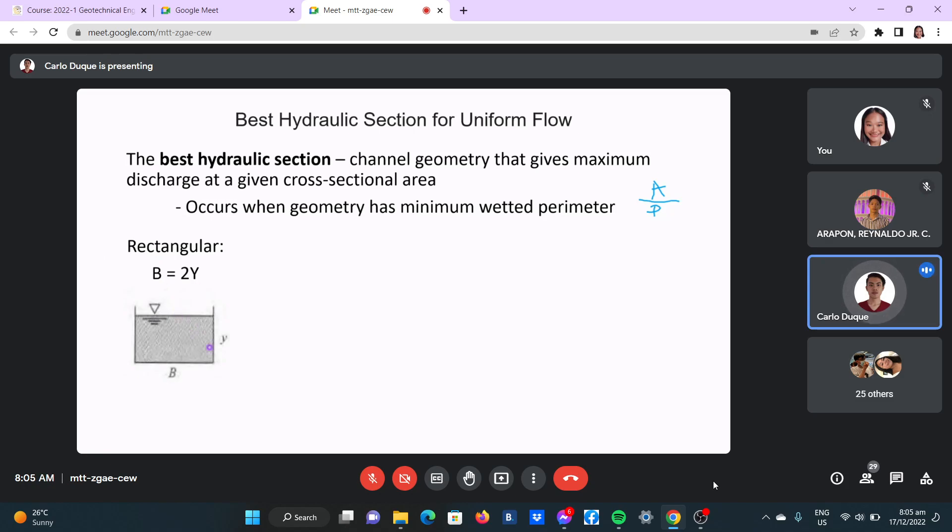Therefore, two times Y is just equal to base. If half of a square, the base and the sides are equal. So if you cut this in half, therefore the Y is just equal to half of the B. So B is equal to 2Y for rectangular, the best base section for rectangular.